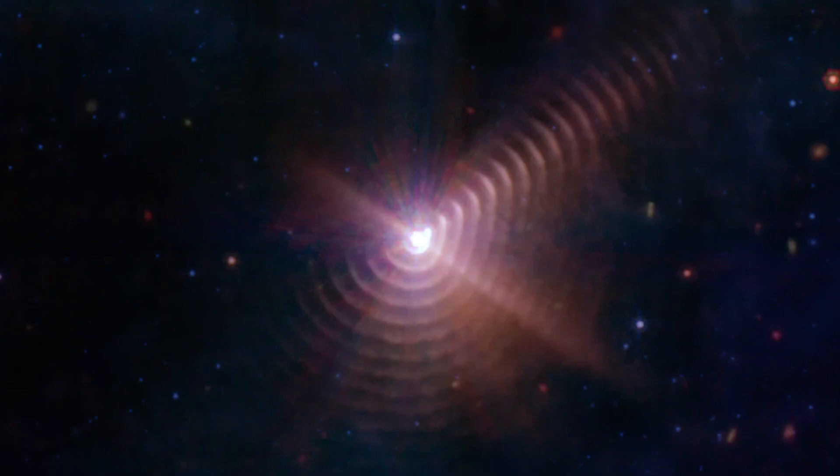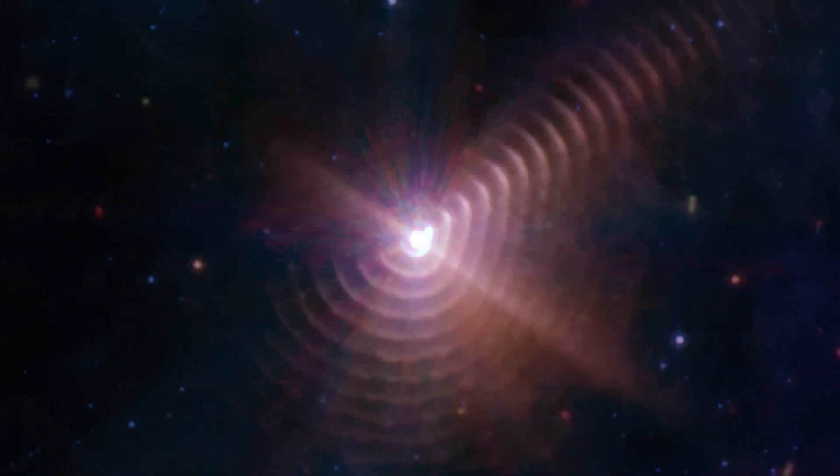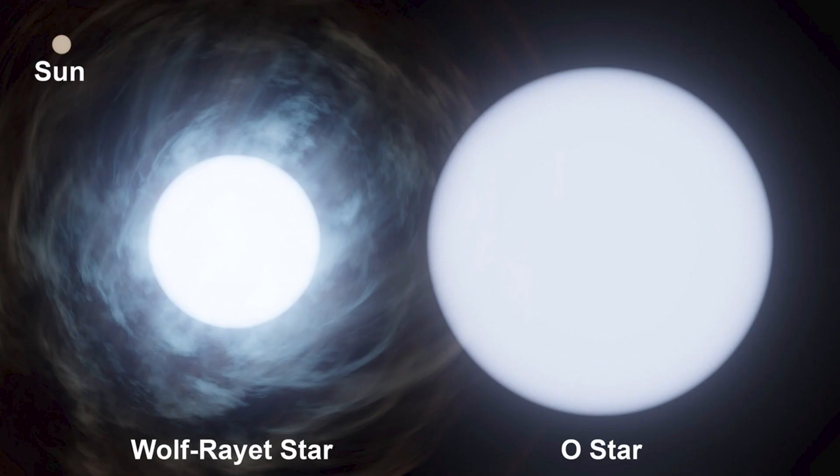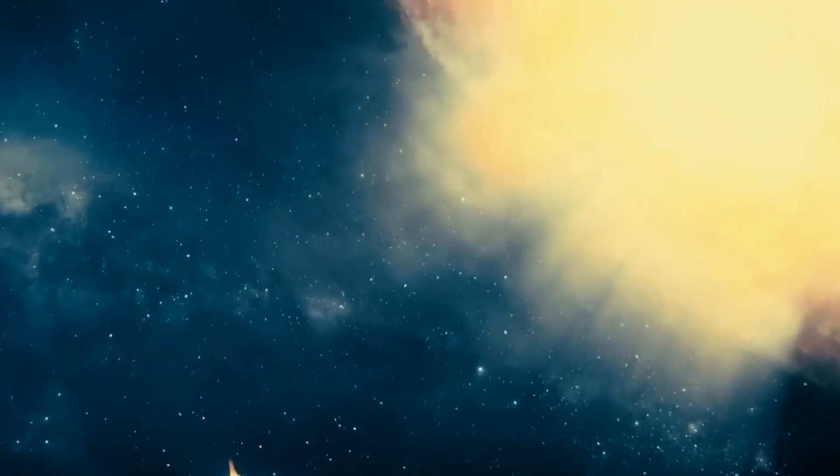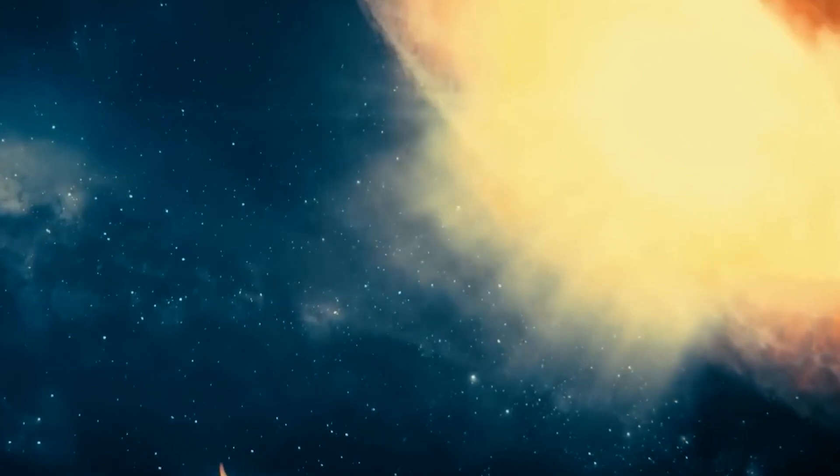JWST has also captured two astonishing images of a binary star system that have left scientists awe-inspired. The first image is of a binary star system called Wolf-Rayet star, or WR140, located at a distance of 1,800 light-years from Earth.